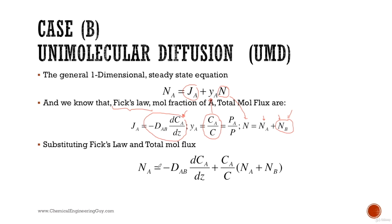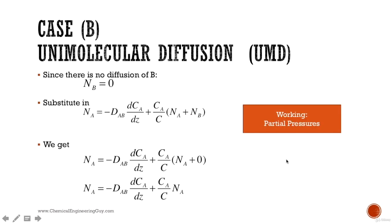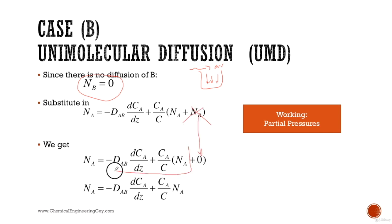Substituting Fick's law and replacing the molar fraction of A with concentrations, and substituting the total molar flow with N_A and N_B, we note that since we assume air is stagnant (N_B = 0), we can eliminate that term. We are left with the simplified equation for N_A.